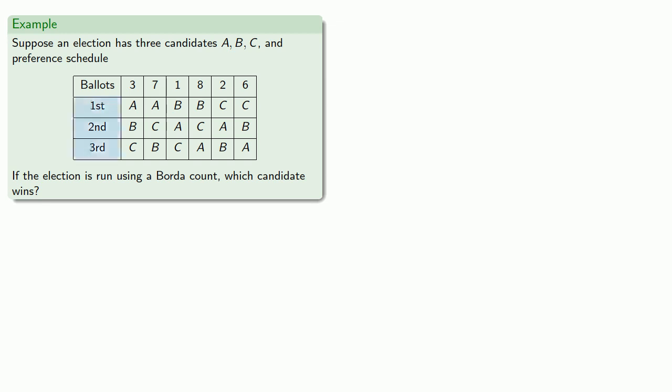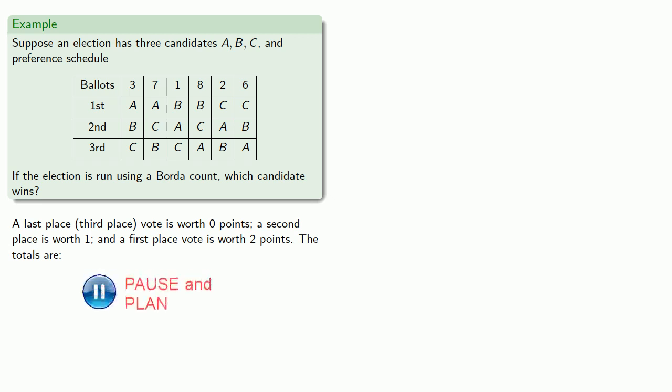Since there's a first, second, and third place, a last place third place vote is worth zero points, a second place is worth one, and a first place vote is worth two points. So, let's find those point totals. It's probably easiest to go candidate by candidate. We see that A wins three plus seven, ten first place votes, and that gets candidate A two times ten, twenty points.